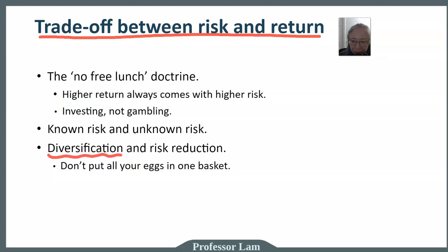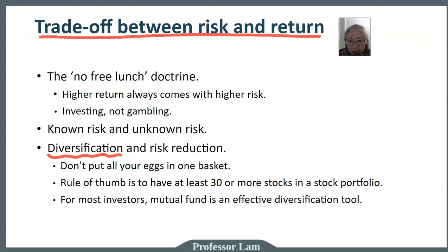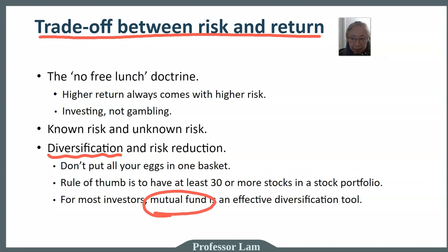The rule of thumb is to have at least 30 or more stocks in a stock portfolio. This is very difficult for an individual investor — choosing 30 stocks and having enough money to purchase sufficient quantities of each. For most investors, a much easier way to achieve diversification is using mutual funds. Unless you have a lot of money to create your own portfolio, a mutual fund is a much better vehicle.